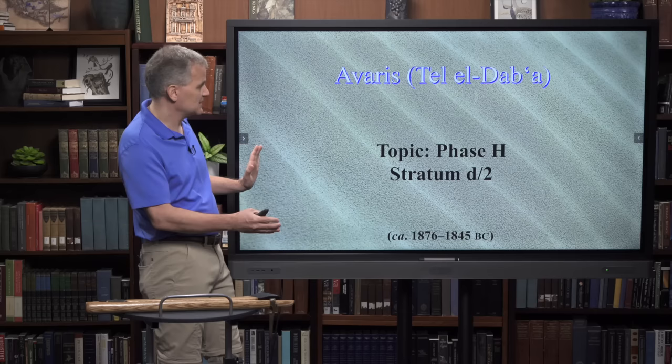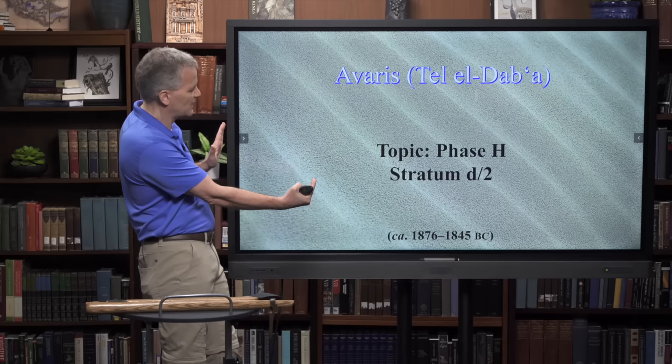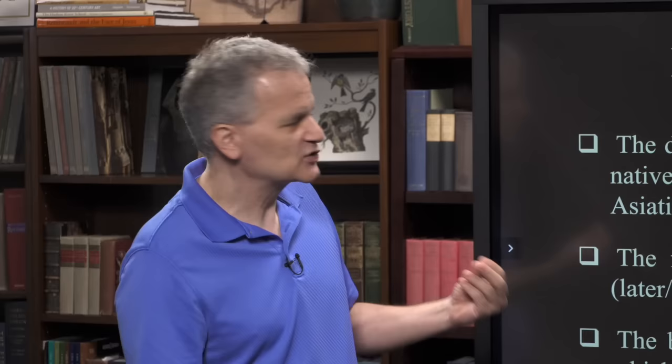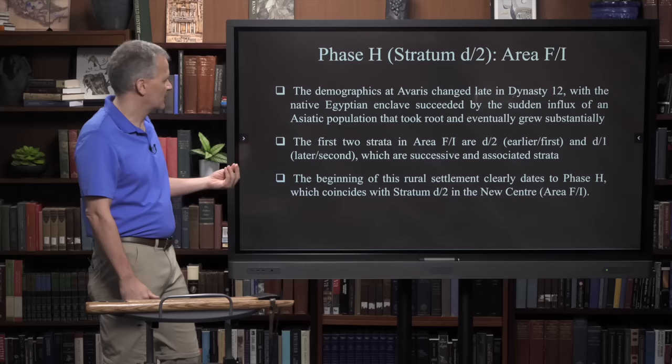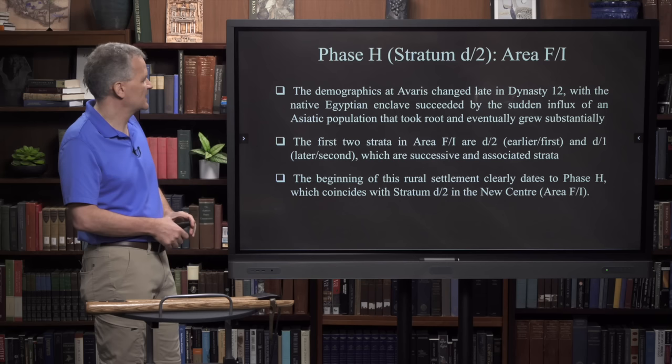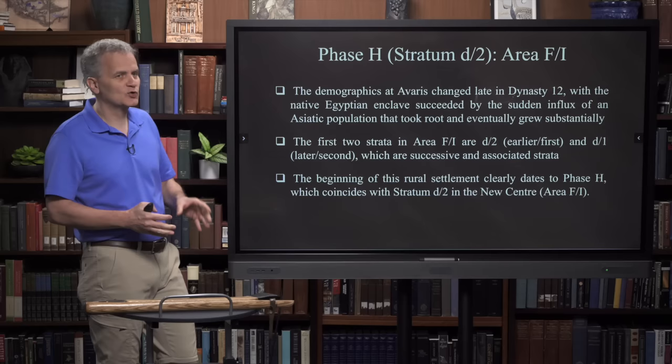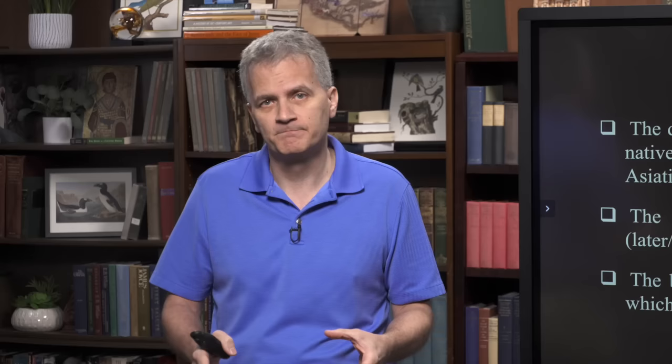Let's move into phase H, known as Stratum D2. I date this phase to 1876 through 1845 BC or so. The demographics at Avaris changed late in Dynasty 12 with the native Egyptian enclave succeeded by the sudden influx of an Asiatic population that took root and eventually started to grow substantially.